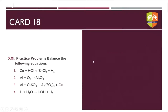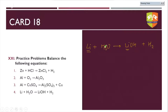Li + H₂O → LiOH + H₂: lithium is balanced; hydrogen is two on the left and three on the right; oxygen is also balanced. We need to balance hydrogen. Try a fractional approach mentally: multiply LiOH by 3/2 so the twos cancel, giving three oxygens on both sides. Since we cannot use fractions, multiply the entire equation by two: 2Li + 2H₂O → 2LiOH + H₂.